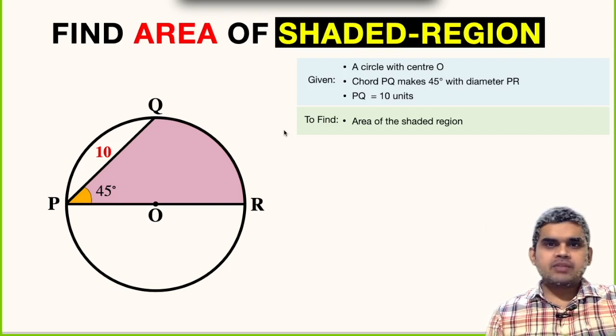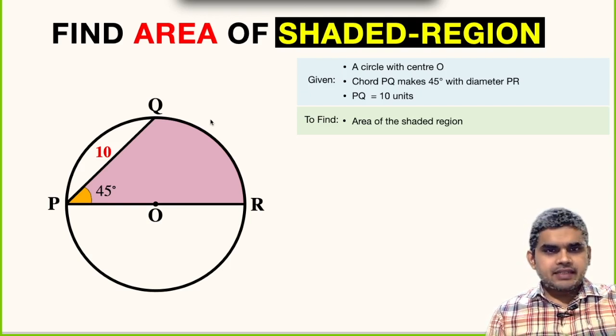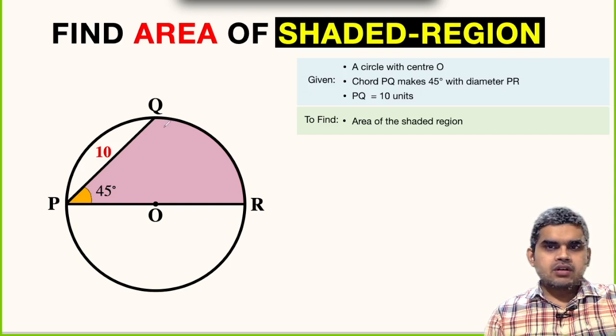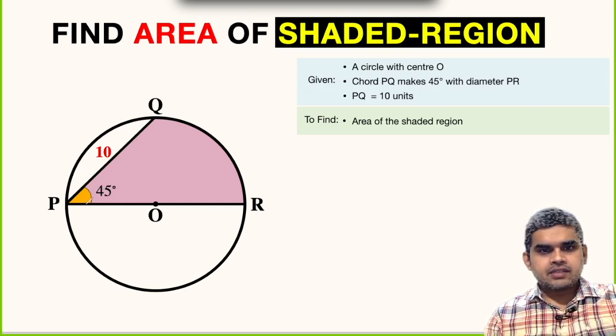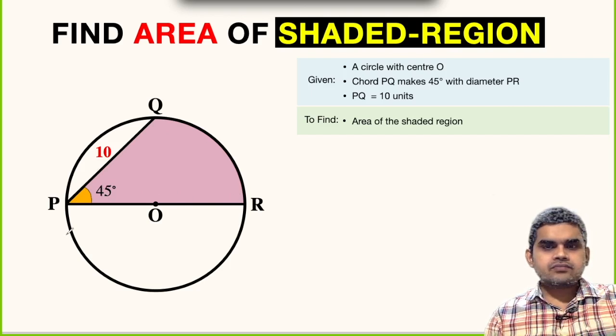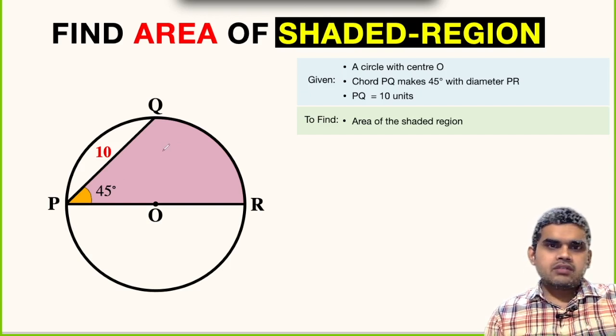Hello friends, welcome to my YouTube channel. Today I am back with another interesting question. In the figure, there is a circle with center at point O. PQ is a chord whose length is 10 units and it is making an angle of 45 degrees with the diameter PR. We are asked to find the area of this shaded region.